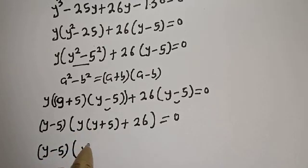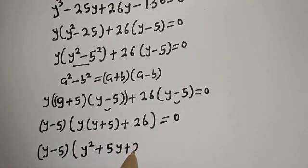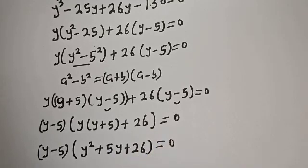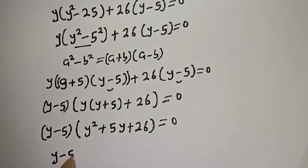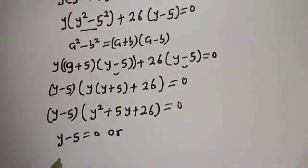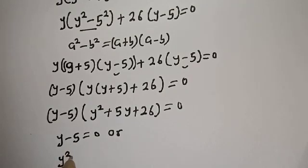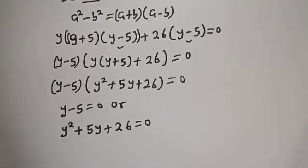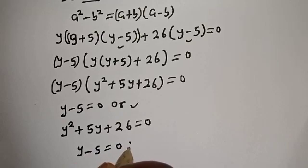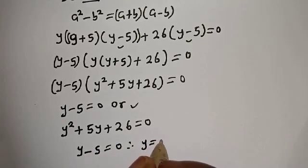This gives us y minus 5 bracket y squared plus 5y plus 26 is equal to 0. There are two cases here. The first case is y minus 5 is equal to 0. Therefore, y is equal to 5.